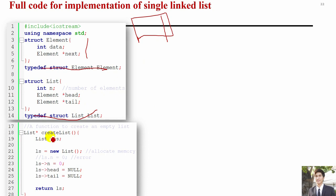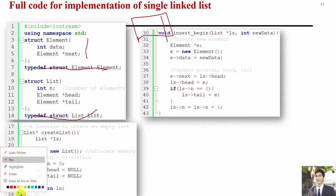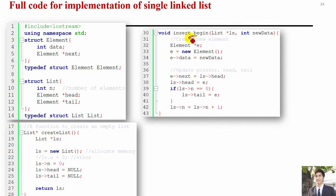Memory is allocated dynamically and updated as we add more data. The insert function adds to the beginning of the list, so the head must always be updated to the new element. We also update tail when the list is empty, since the first element added becomes both head and tail. We create the new box, set data, then make e->next point to the current head.